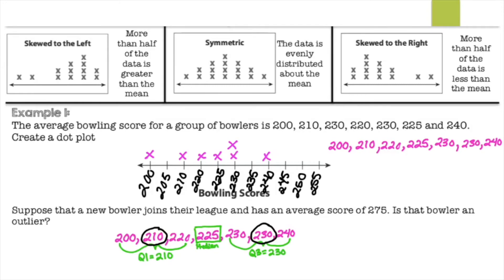So now you have to find your IQR. Well, IQR is quartile 3 minus quartile 1. So that's 230 minus 210. So that's 20.